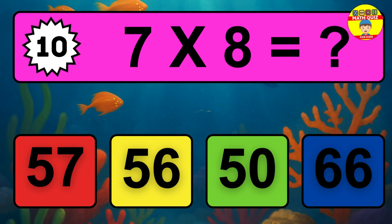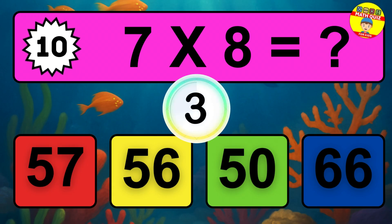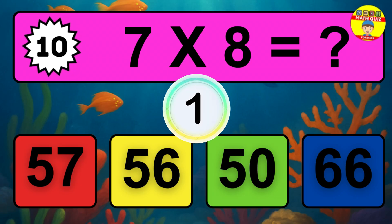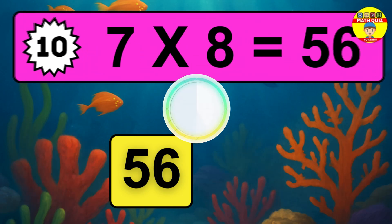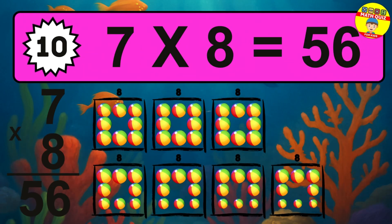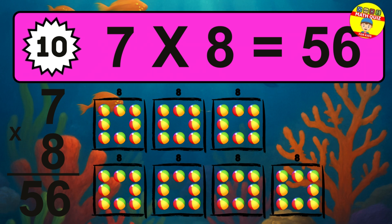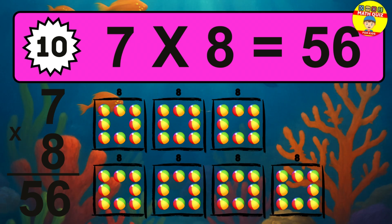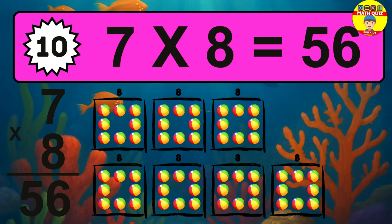Question 10. 7 times 8 equals what? The answer is 7 times 8 is 56. To calculate, we have 7 groups with 8 balls each one. So, how many balls do we have? 56 balls.